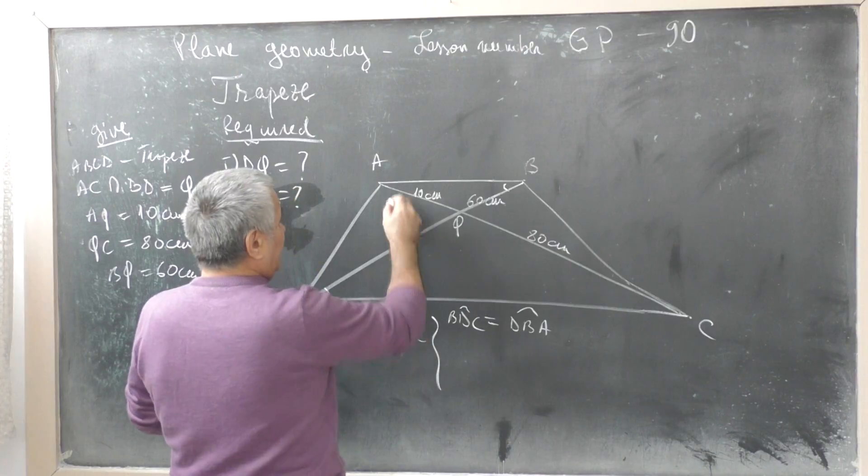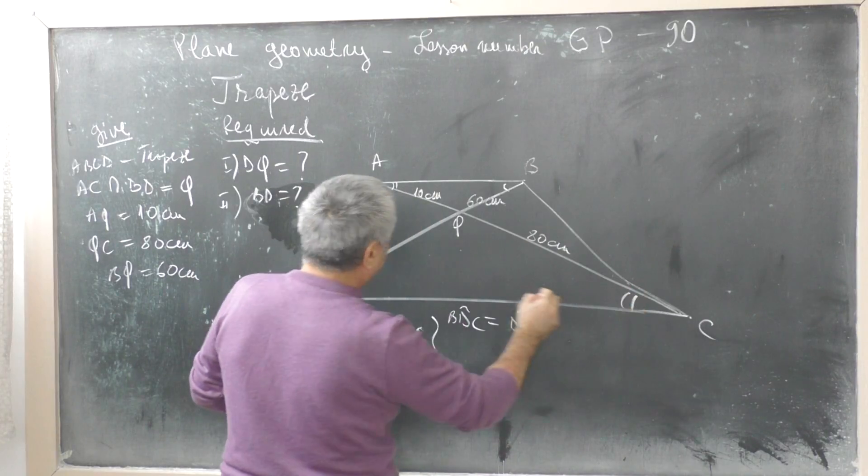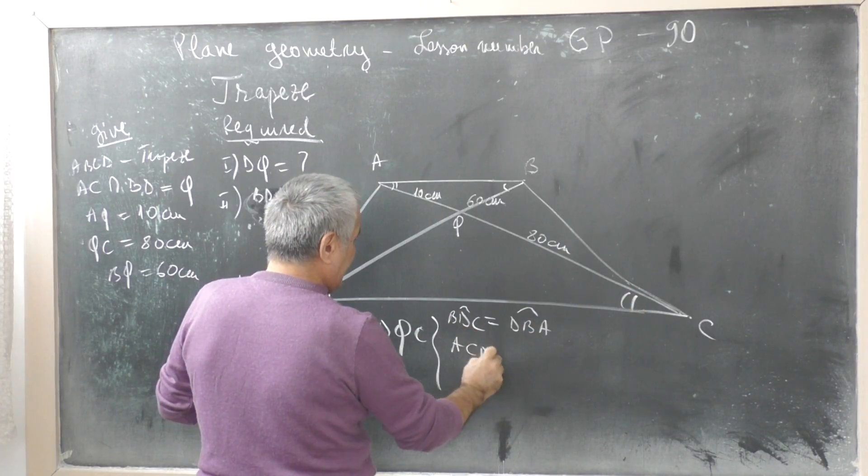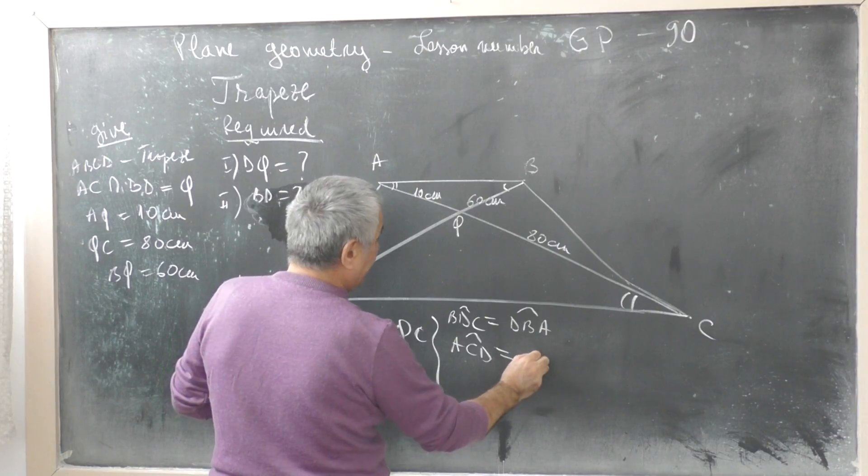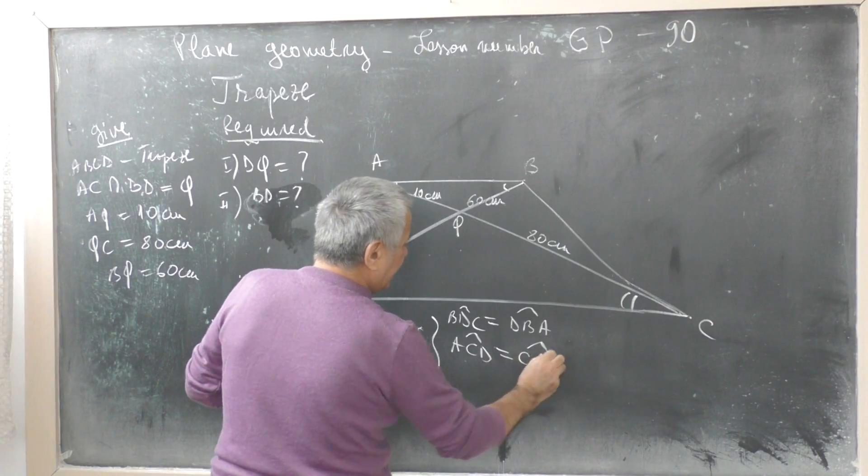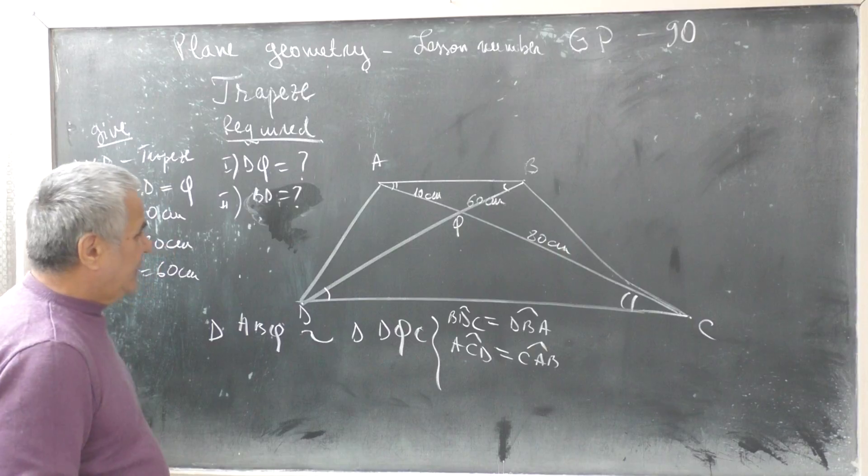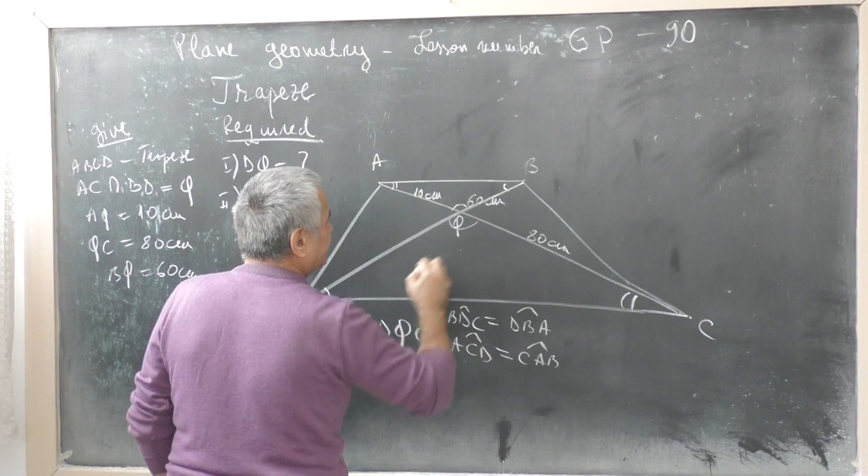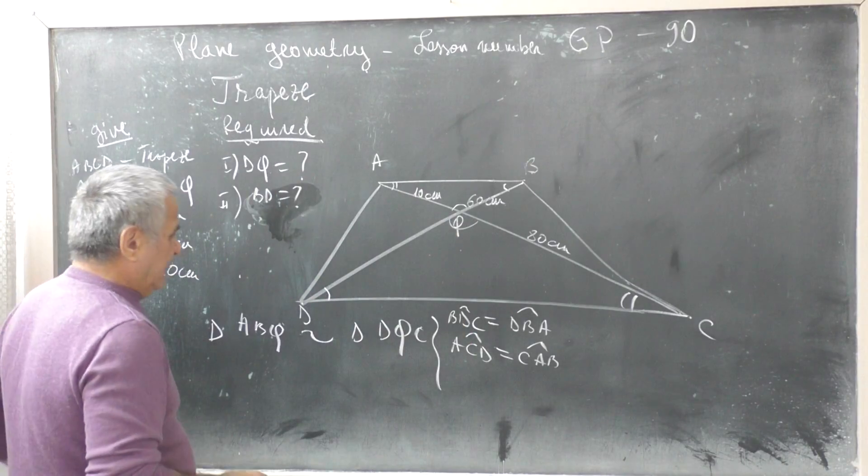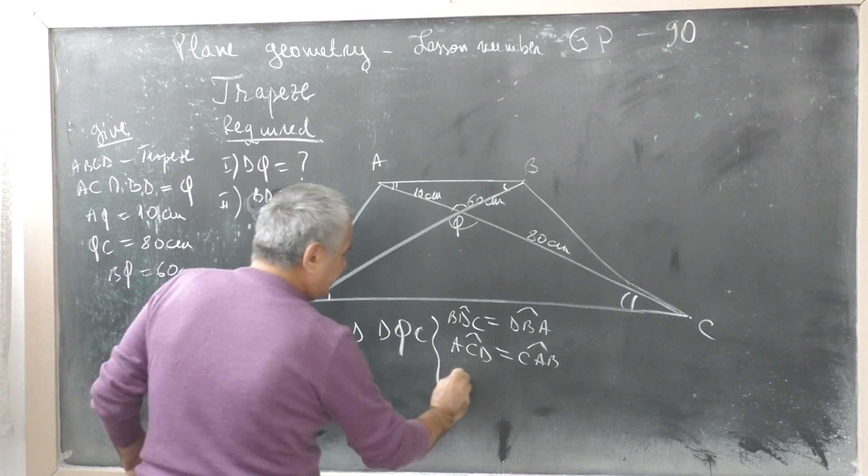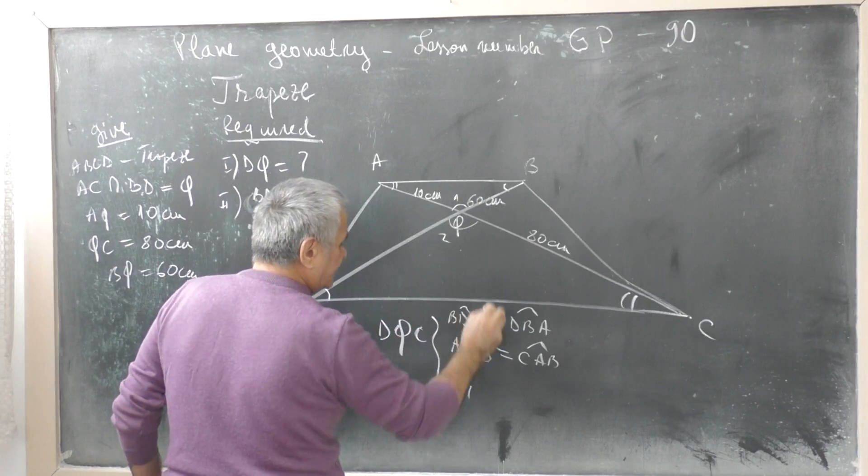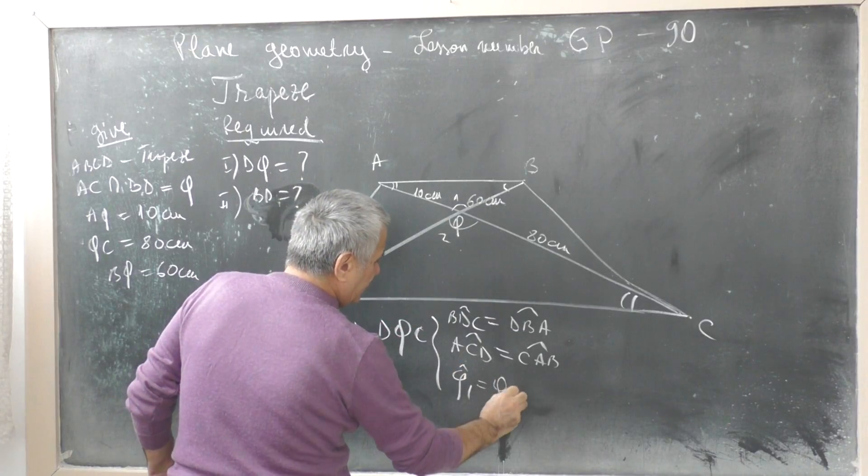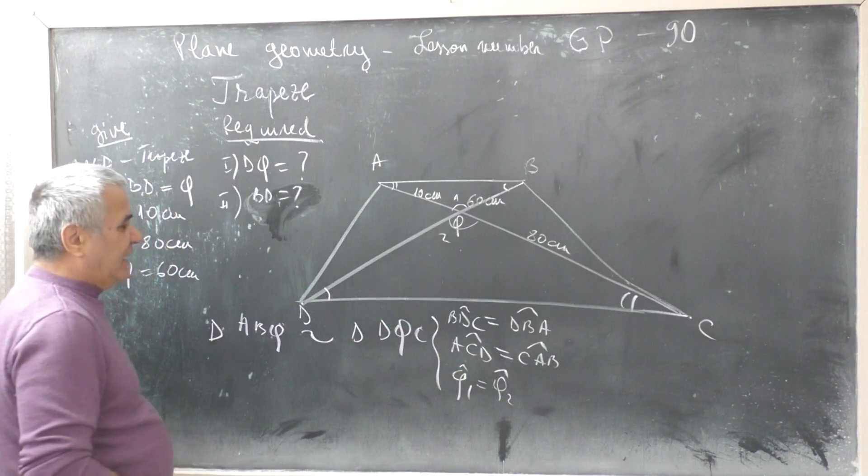Angle RCB equals angle CRB, internal alternate equal angles. Q1 equals Q2, opposite side angles.